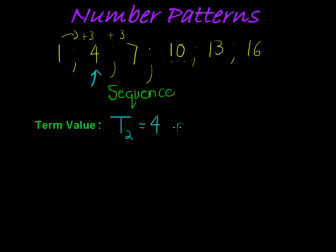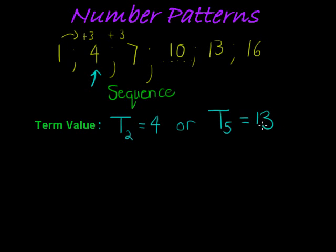So what do we have? T5 — T5 is the fifth term. This is the notation that we're going to use: 1, 2, 3, 4, 5 — the fifth term is equal to 13.